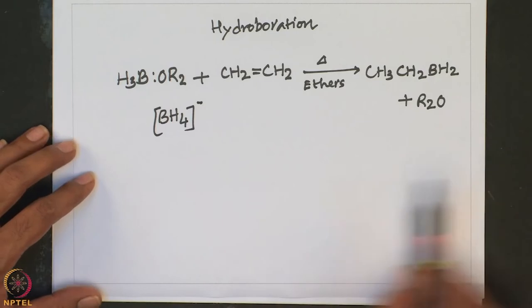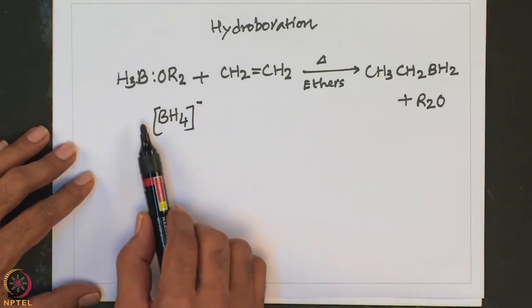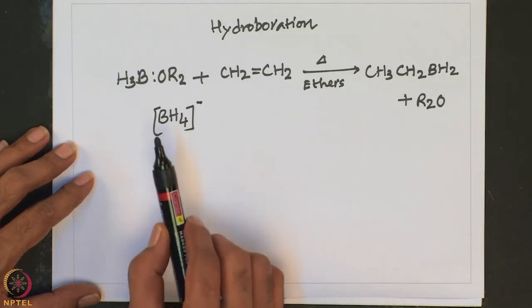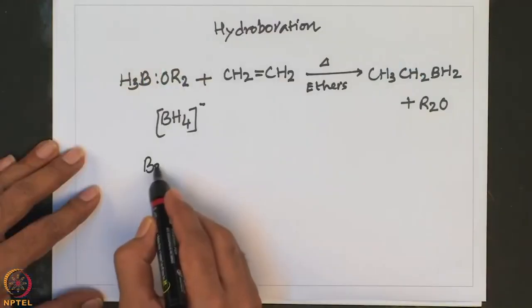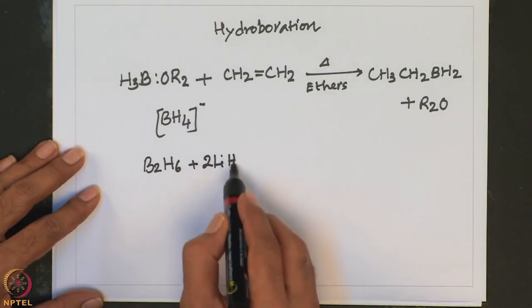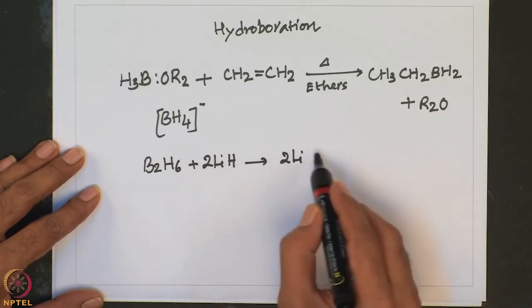BH4- is also called the tetrahydridoborate ion. With sodium it is called sodium borohydride, and with lithium it is lithium borohydride. This ion is a useful intermediate for the preparation of metal hydride complexes and a variety of borane adducts. Diborane reacts with alkali metal hydrides to produce salts containing BH4-. Because of the sensitivity of diborane and lithium hydride, these reactions must not be carried out in water or under atmosphere — they must be performed in non-aqueous medium using very dry organic solvents. One can take B2H6 and treat it with two equivalents of lithium hydride to generate the very useful lithium borohydride, carried out in diglyme or triglyme.